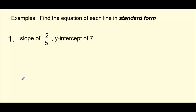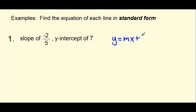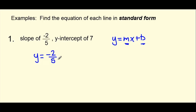Let's take a look at some examples on how to write lines in standard form given various forms of information. The first example gives us a slope of negative two-fifths and a y-intercept of seven. This leads us immediately to think of y equals mx plus b, where m is the slope and b is our y-intercept. So let's write our equation in slope y-intercept form first, then convert it into standard form. Simply replace m and b: y equals negative two-fifths x plus seven.